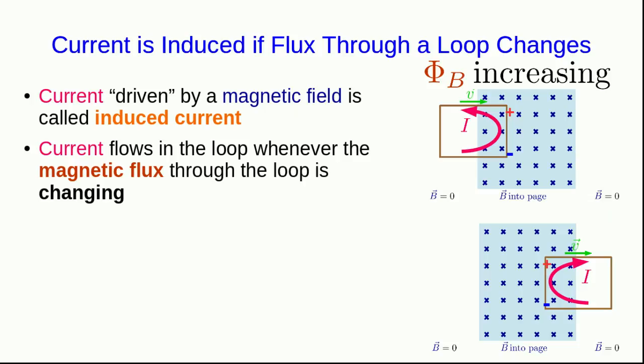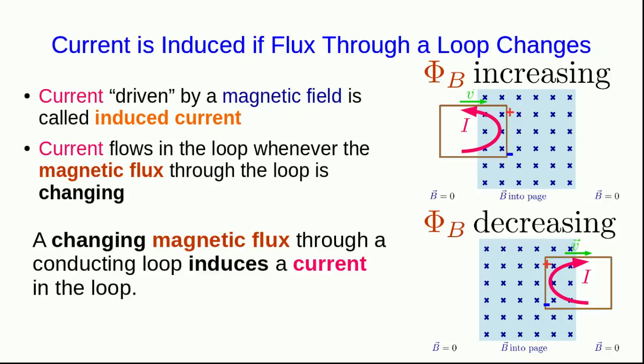Well, the common feature is that the magnetic flux through the loop is changing. The flux is increasing as the loop enters the field, and the flux is decreasing as it exits. And so what we see is that a changing magnetic flux through a conducting loop will induce a current in the loop. And this is an informal statement of something we'll write down much more precisely later, which is Faraday's law.